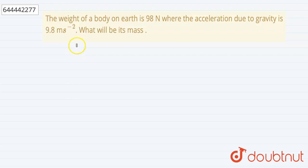Hello, our question is the weight of a body on earth is given as 98 newtons, where the acceleration due to gravity is 9.8 meter per second square. We have to find the mass of the body.